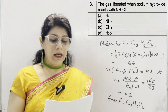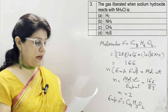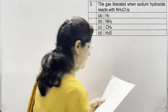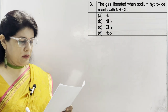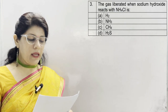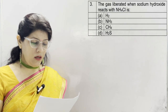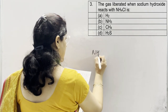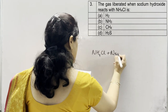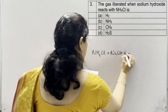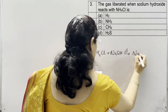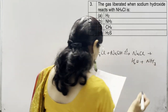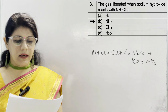In question 3, the gas liberated when sodium hydroxide reacts with NH₄Cl. Options are: A hydrogen, B ammonia, C methane, and D H₂S. The reaction is: NH₄Cl + NaOH (on heating) gives NaCl + water + ammonia. So option B, ammonia, is correct.